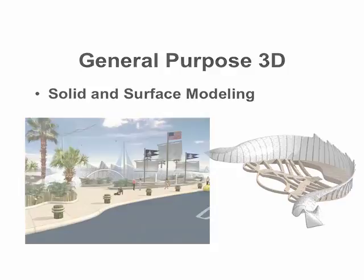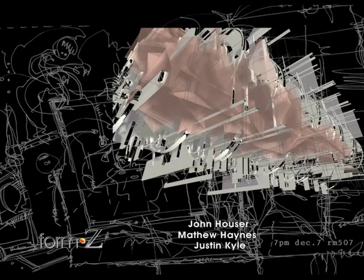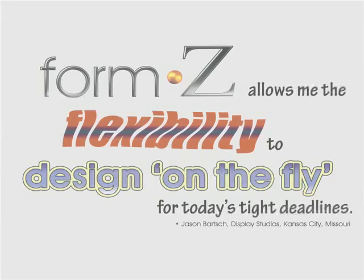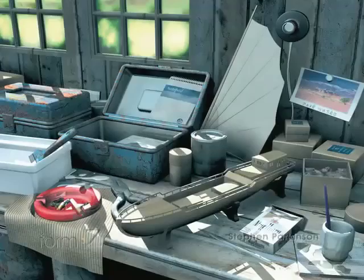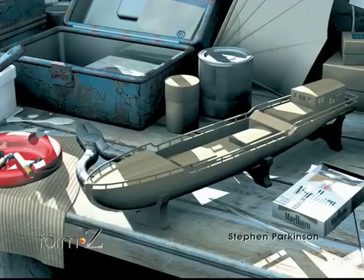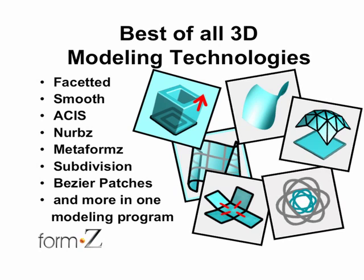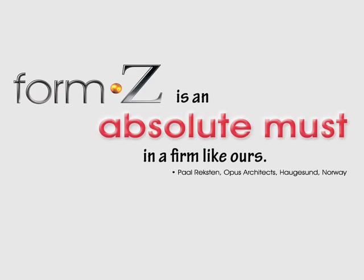Form Z is a general-purpose 3D solid and surface modeling program. Form Z contains the best of all the different 3D modeling technologies that are out there, including faceted, smooth, ACES, NURBS, metaforms, surface subdivision tools, Bezier patch modeling, and many more different personalities that the geometry can have in Form Z.